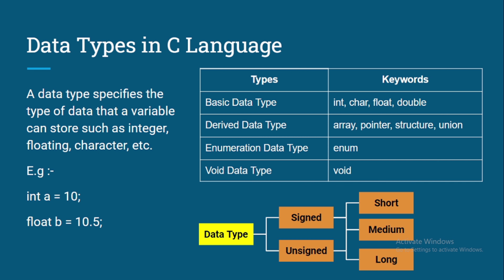Then we have the last data type — void. Void means blank in C programming. In a previous program where we printed 'Hello World', we used the void keyword like 'void main()'. Void is basically a data type which tells the compiler that the function will not return anything. Keep in mind: void means nothing.